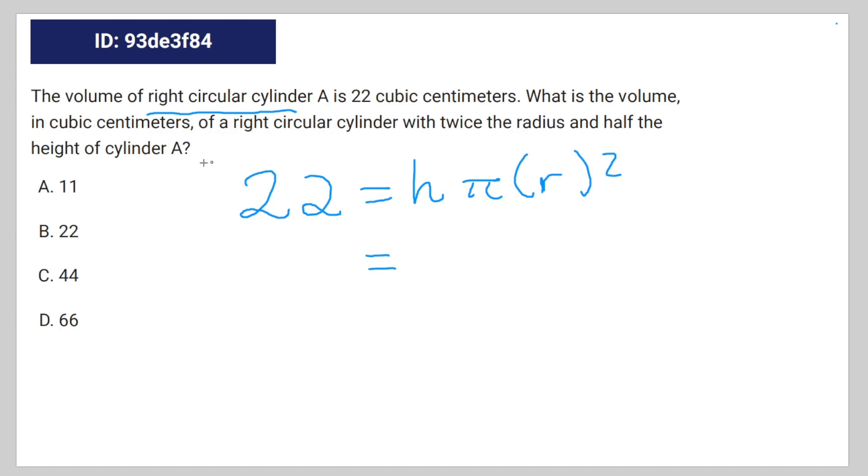You can write the modification of that equation, which they described in the second part of the question, like this: 0.5H times pi 2R to the power of 2.